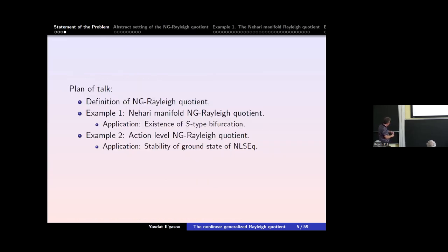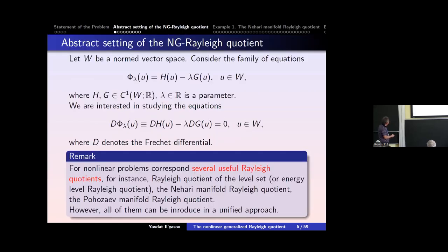What follows is: I give a definition as I understand it now, then I give some examples where this new definition really works — two examples, if I have time. So let's start with the abstract setting. Consider the functional. Here the functional is well-defined. We can say lambda is in some power, so we can suppose this is a nonlinear function.